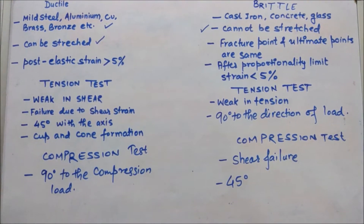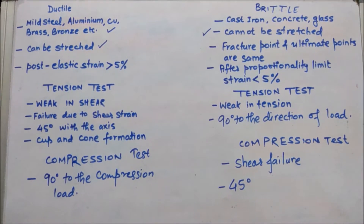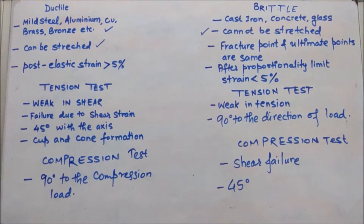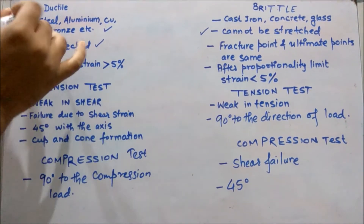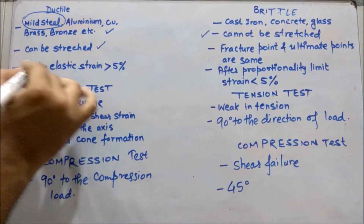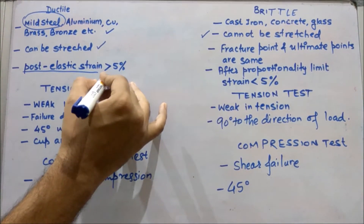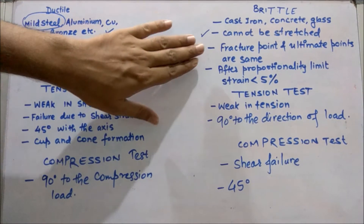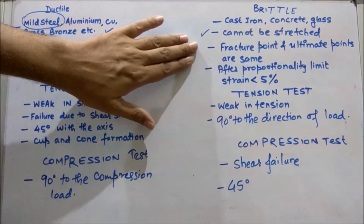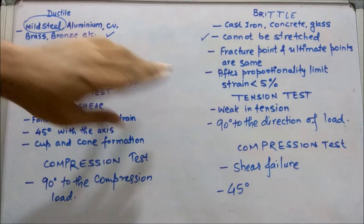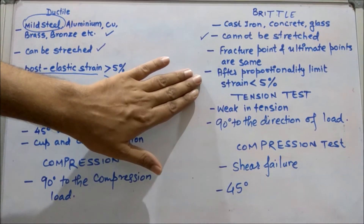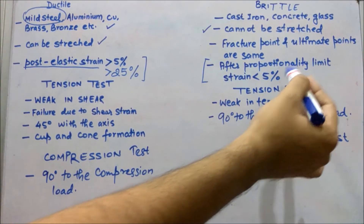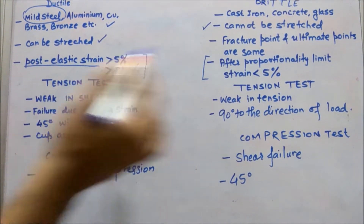Post-elastic strain is always greater in ductile material — more than 5%. Post-elastic strain means after the elastic limit has been crossed, the strain is more than 5%. For mild steel, this post-elastic strain is greater than 25%. In brittle materials, the fracture point and the ultimate stress point are the same, and after the proportionality limit has been crossed, the strain will be less than 5%.